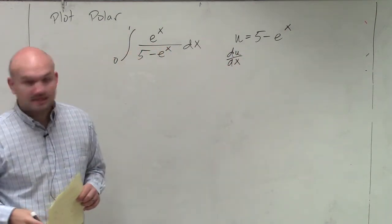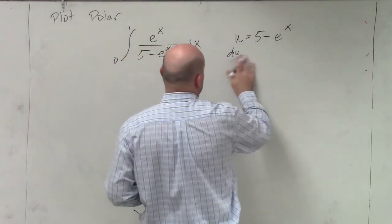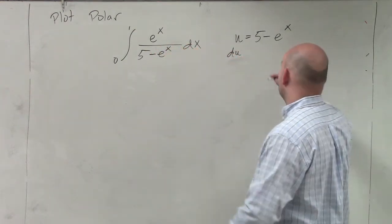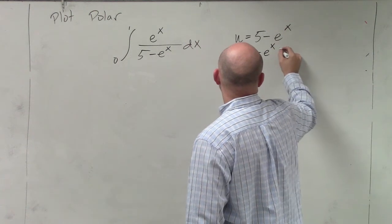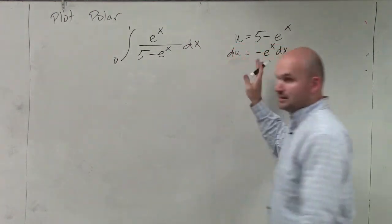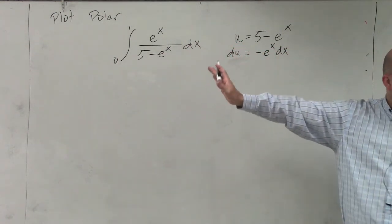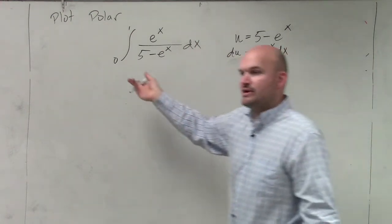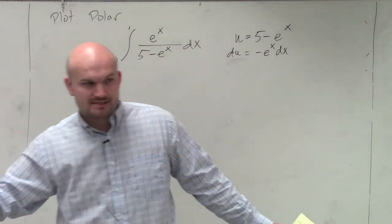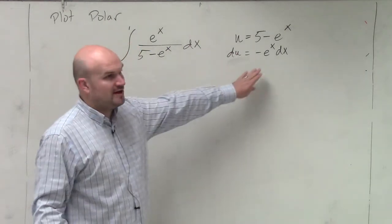But when I do du/dx, or let's just do du, and we'll multiply by the dx on both sides, I'm going to get a negative e to the x dx. Because that negative I can take on the outside of my derivative. I can take out a factor. And then the derivative of e to the x is just e to the x. So would everybody follow me with that?